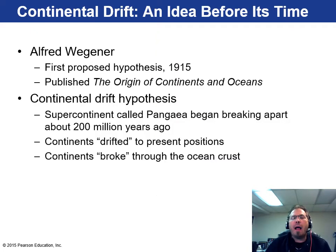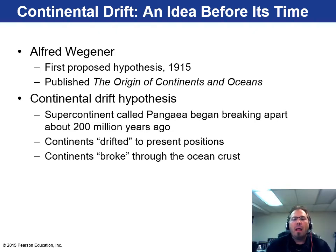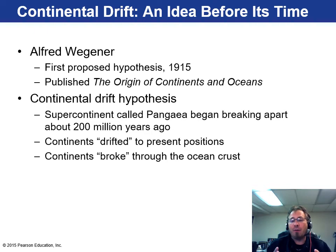The first initial hypothesis was actually called Continental Drift. It was proposed by a German meteorologist in 1915, and he published a paper called 'The Origin of Continents and Oceans.' It was received with lukewarm reception. In a nutshell, what he proposed is that at one time there was a supercontinent called Pangaea that began breaking up around 200 million years ago, and the continents drifted to their present positions, breaking through the ocean crust. It was really ahead of its time.